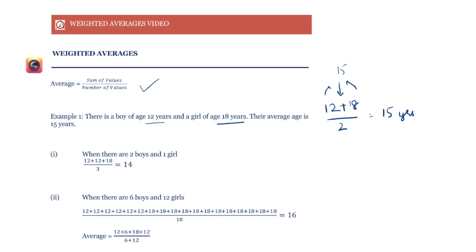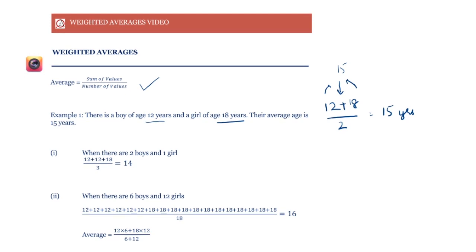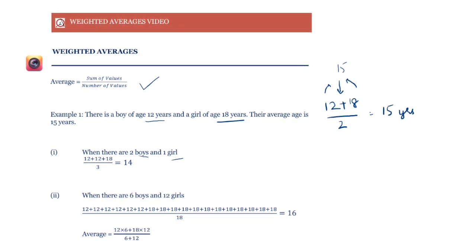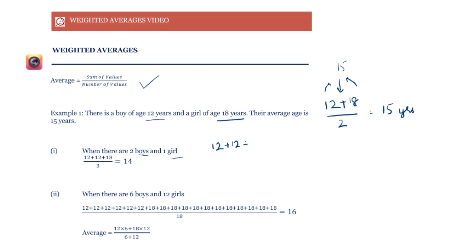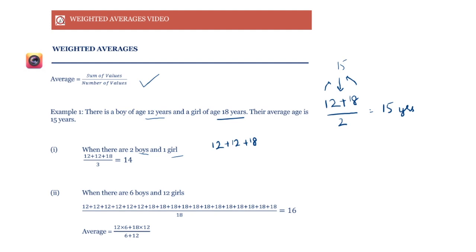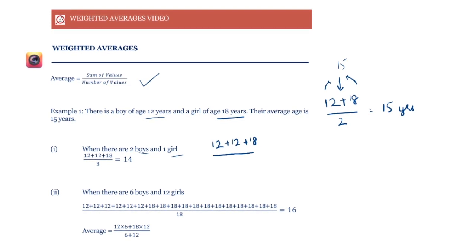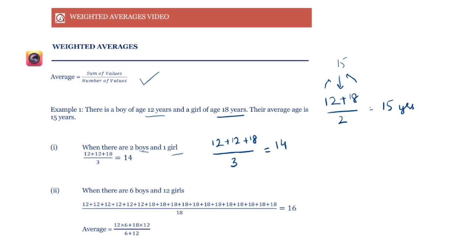But what happens when we have two boys and one girl? So now we have two 12s and only one 18. Will the average still lie at 15? No, it won't. Let's calculate and see. We get that this is equal to 14.